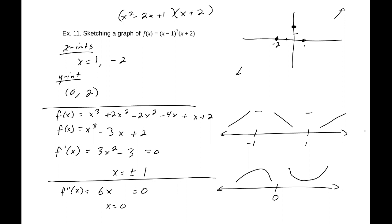Going back to the graph: it's decreasing past x = -1. We could find the local maximum, but it's not necessary for a good sketch. It's concave down before 0 and increasing, then concave up and increasing after 0, heading to positive infinity. At x = -1 it changes from increasing to decreasing, concave down. At x = 1 it changes direction, heading to negative infinity. There is a good sketch of what this graph looks like based on our derivative tests and intercepts.